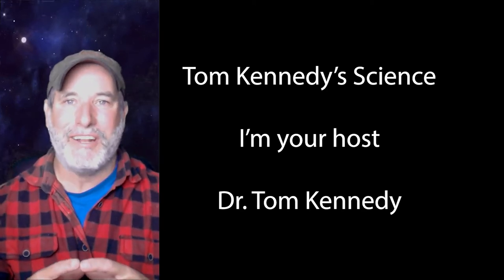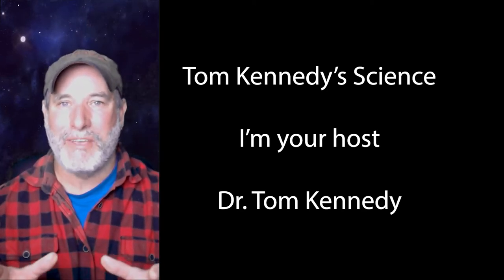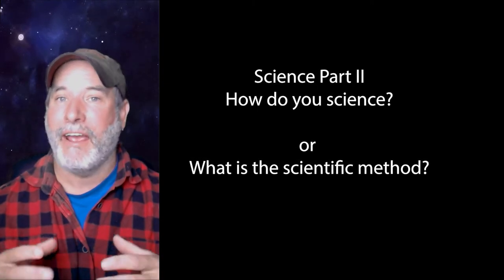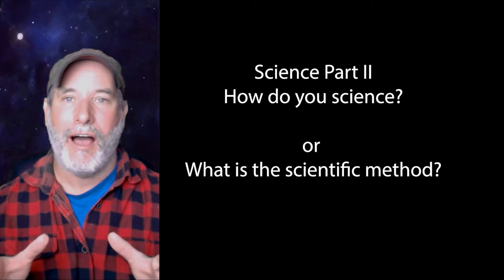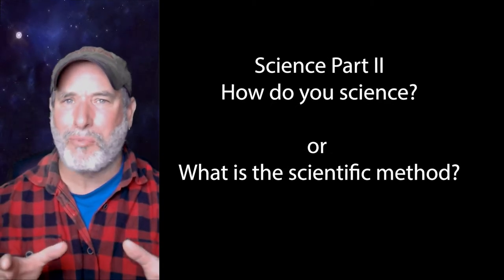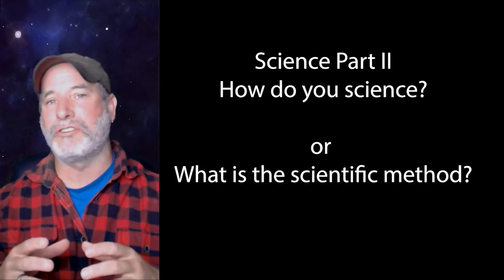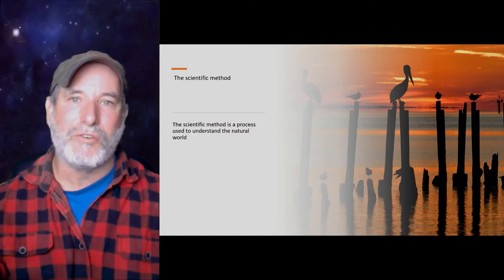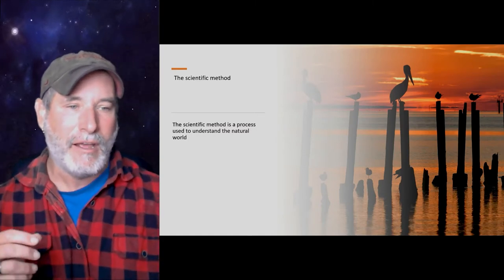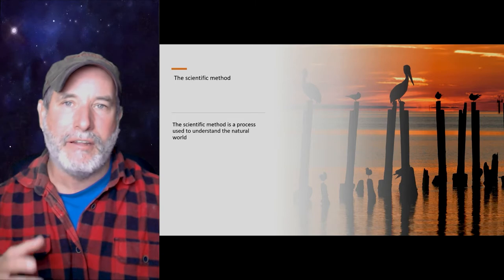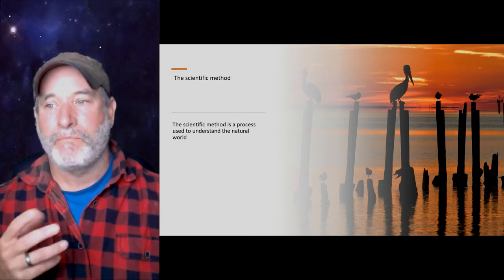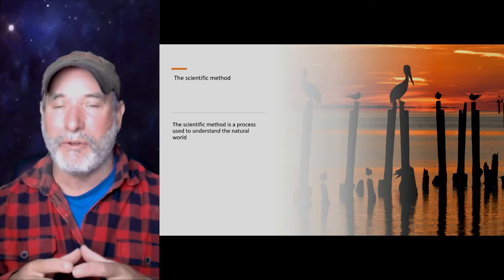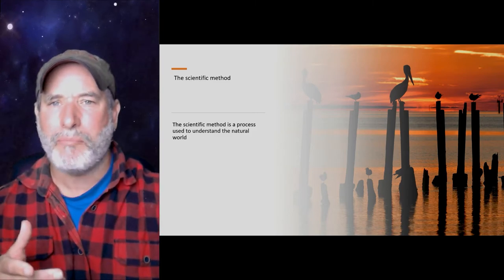Hi, I'm Dr. Tom Kennedy and welcome to Tom Kennedy Science. This is part two of my series 'What is Science,' and this is going to cover how we do science — the process of science. Most of us know this as the scientific method. Science is a way of thinking, a way of doing things. The scientific method is a process used to understand the natural world, like these pelicans at sunset — this is where I grew up in North Florida.